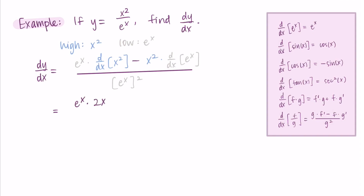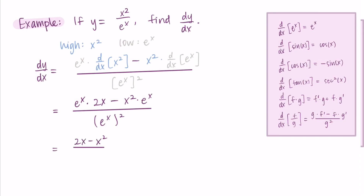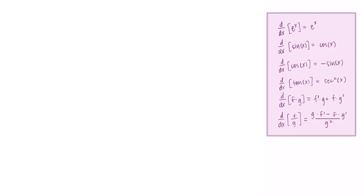Taking the derivatives: e to the x times the derivative of x squared — that's 2x — minus x squared times the derivative of e to the x, which is just itself, e to the x, all divided by e to the x quantity squared. To simplify, I cancel out an e to the x from each term, and I'm left with (2x − x²) over e to the x. You don't have to simplify, but it's nice to see.